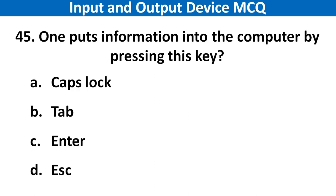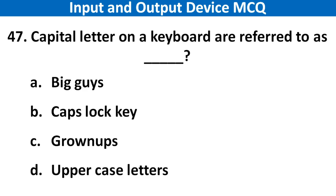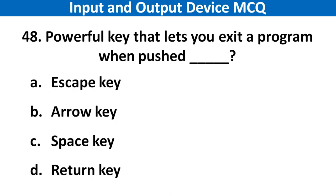Next question: One puts information into the computer by pressing this key. Right answer is option C: Enter. Next question: The primary input device for computers is. Right answer is option A: Keyboard. Next question: Letters, numbers and symbols found on a keyboard are called. Right answer is option A: Keys. Next question: Which key lets you exit a program? Right answer is option A: Escape key.